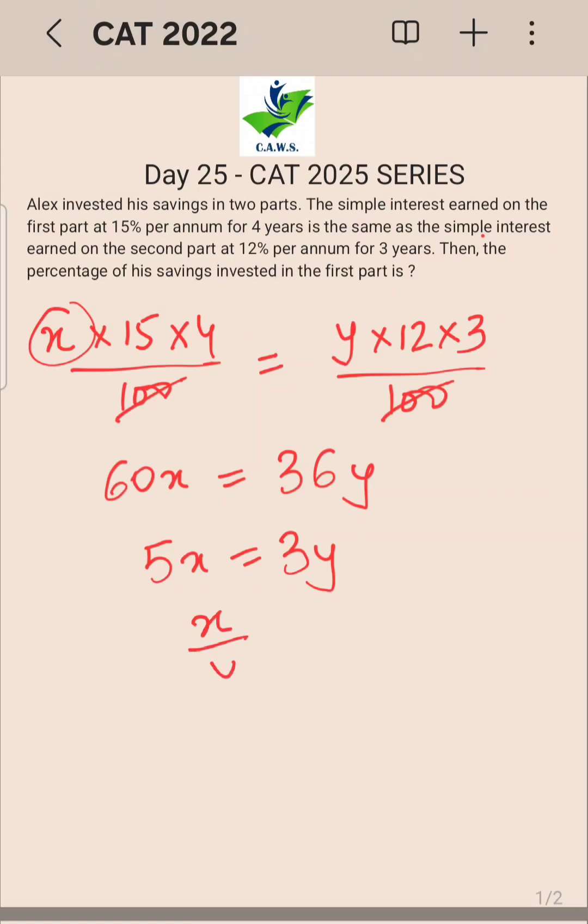Or rather, can I say x by y is 3 by 5? They are saying what is the contribution or percentage of savings in the first part. Savings in the first part will be x upon total, which is x plus y.